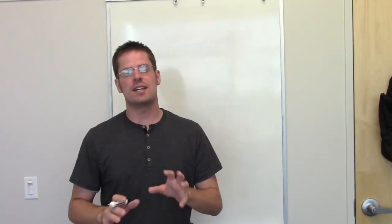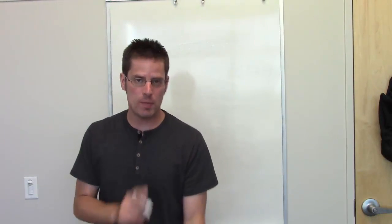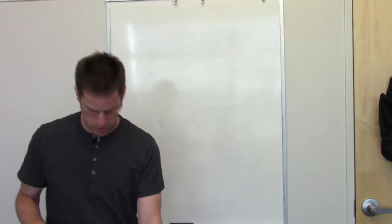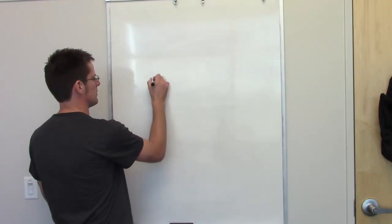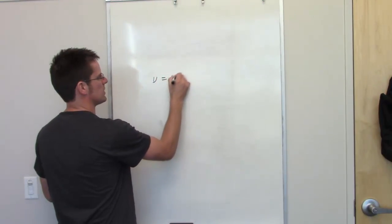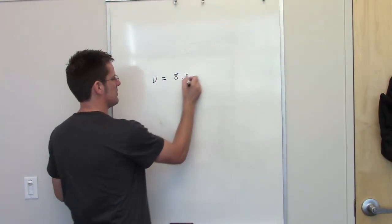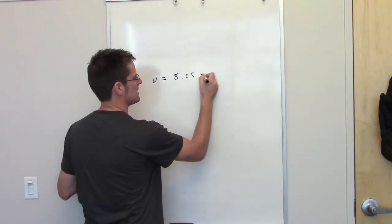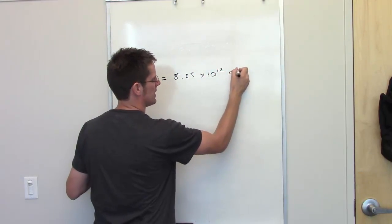In this first question, we're asked to calculate the energy of a photon whose electromagnetic radiation has the following frequency: frequency equals 8.25 times 10 to the 12th inverse seconds.